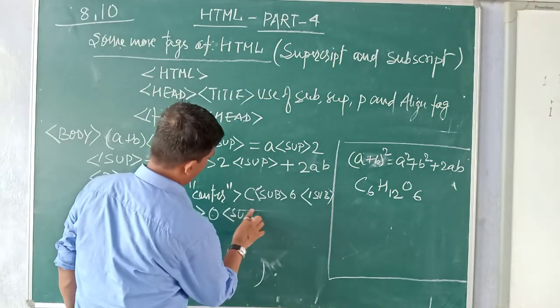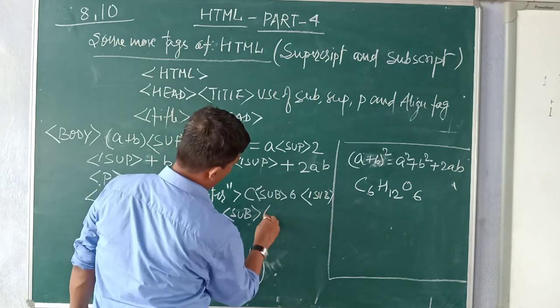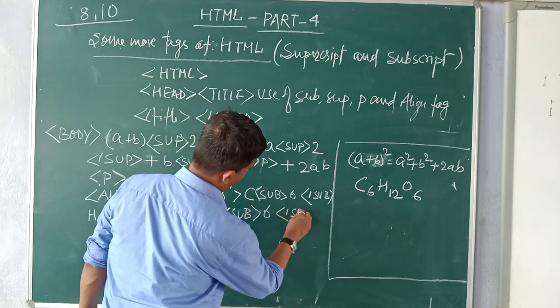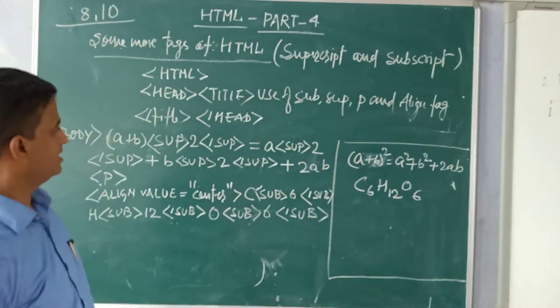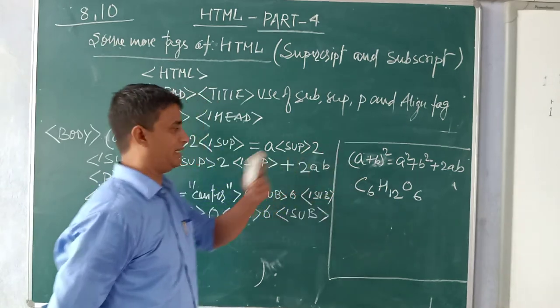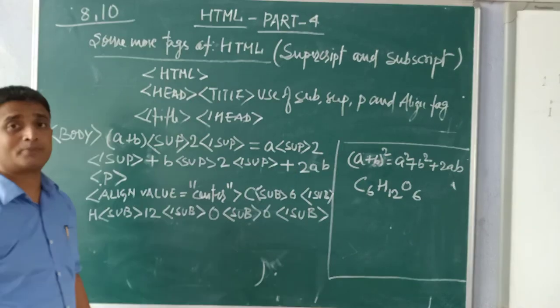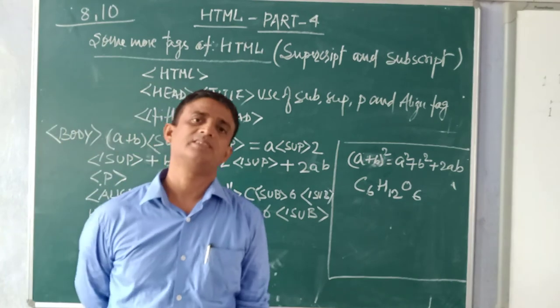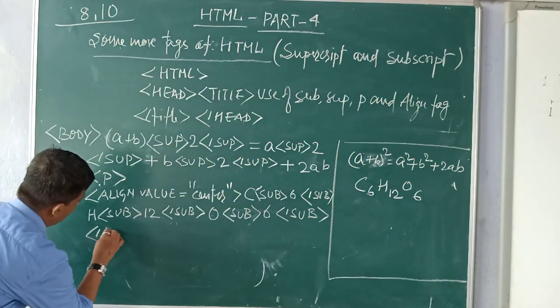Sub O. O you have to - again sub you have to put. The value of sub is 6 here. Close the sub. Your work is over. Now this align, I have to close because this is a container tag. So I will close now the align.